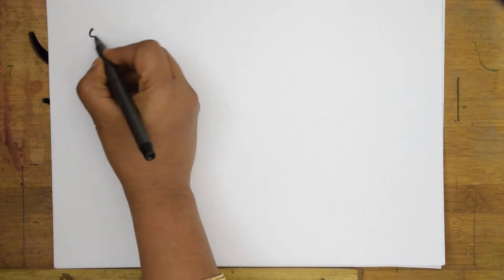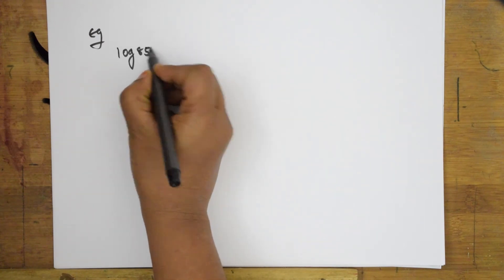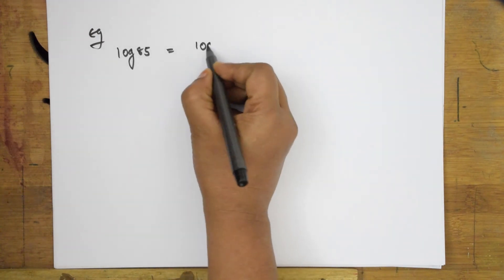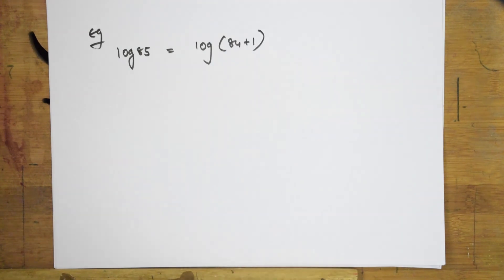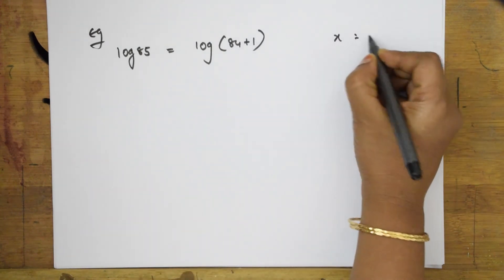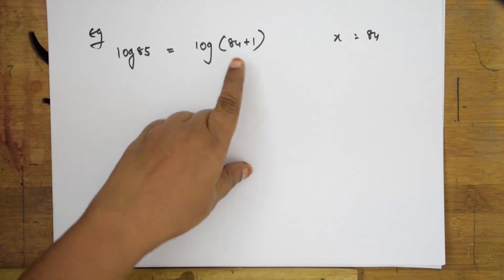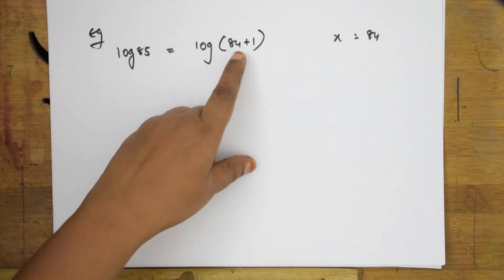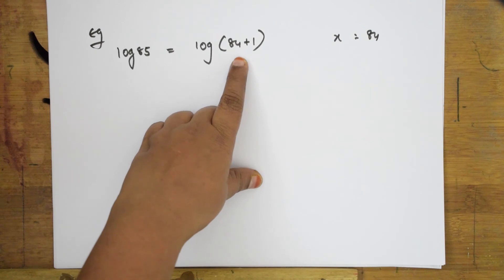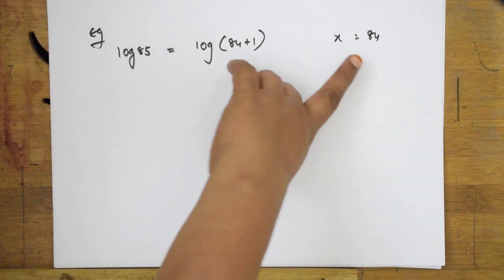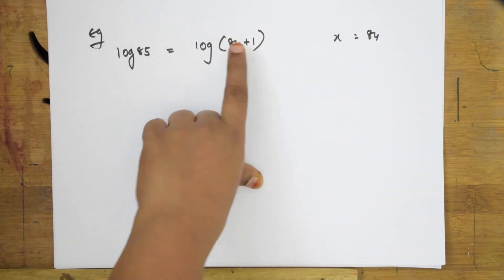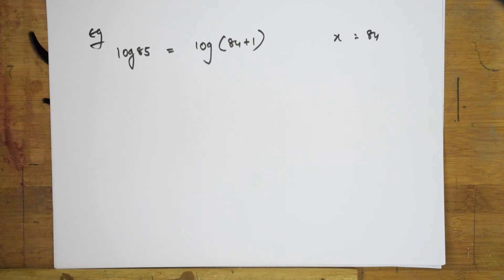Now, let us come back and do one more example here. Suppose, if a number like 85 is given to me, I need to find log 85. How can I write? Let us see. Log 85 can be written as log(84 + 1). Here x value is nothing but 84. So here, the x value 84 where the incremental value is plus 1.